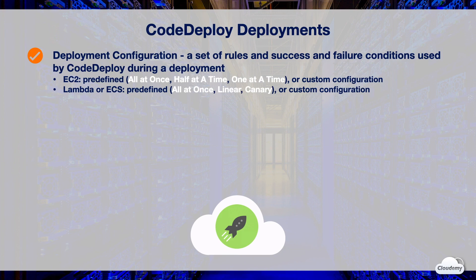For Lambda or ECS deployments, the deployment configuration specifies the percentage of traffic that is shifted from the old environment to the new environment. You can use one of three predefined configurations: all at once, linear deployment, and canary deployment. Alternatively, you can create a custom linear deployment or canary deployment.